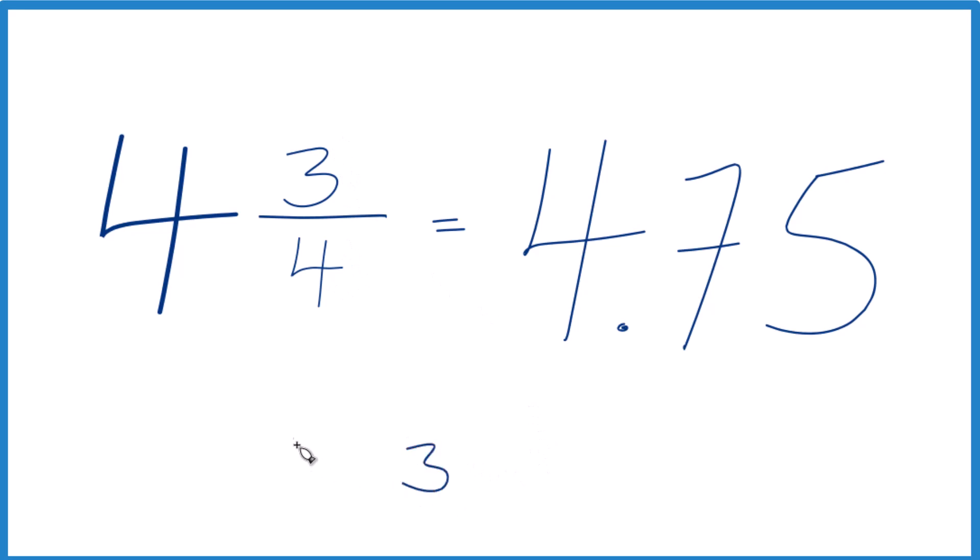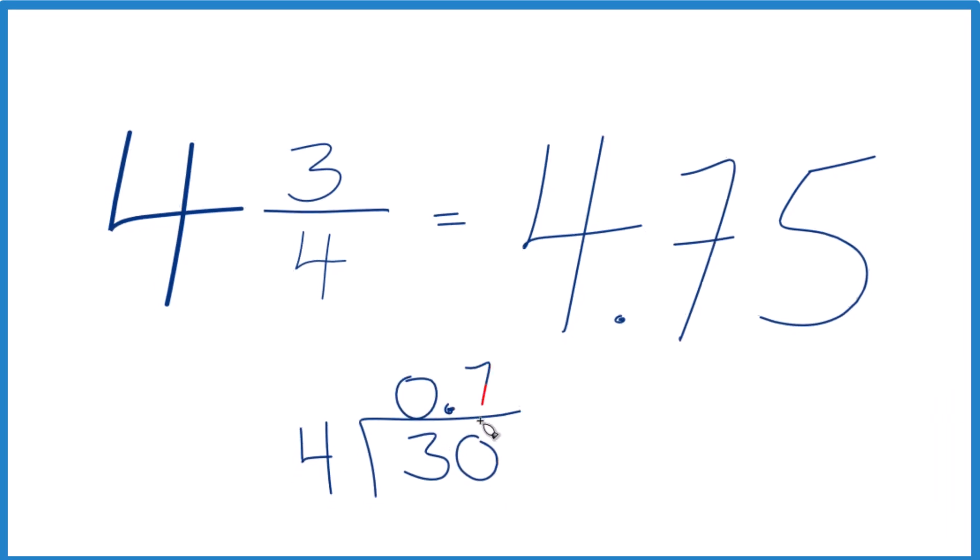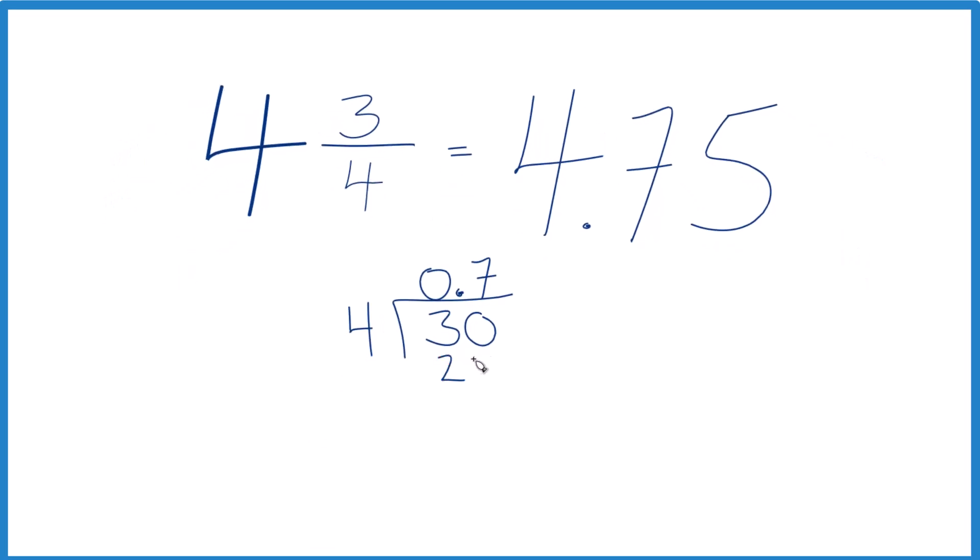We've got 3. We want to know how many times 4 goes into 3. Doesn't go into 3, but we could call it 30 if we put a zero and a decimal point. 7 times 4, that's 28. Subtract, we get 2.